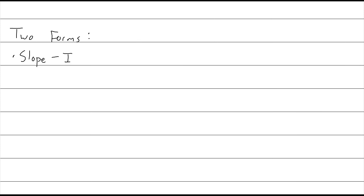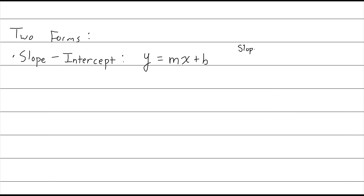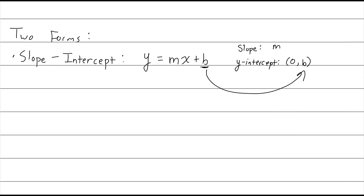The two forms are slope-intercept — probably the most important one — which you may be familiar with: y equals mx plus b. M represents the slope, and the y-intercept — hence the term slope-intercept — is the point (0, b), the constant term. So that b is plugged into an ordered pair as the y-value, and 0 is the x. That's slope-intercept form.